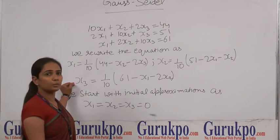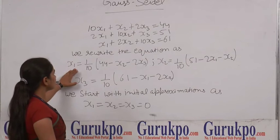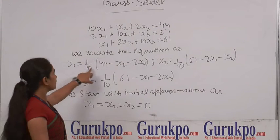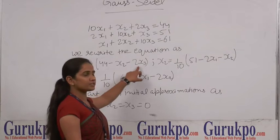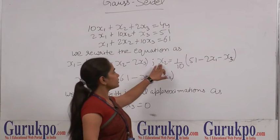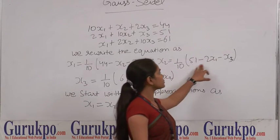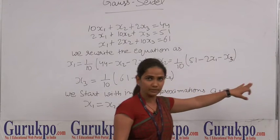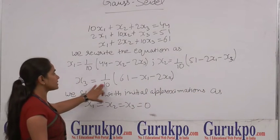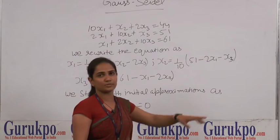So now, we have our equations in the form: x1 equals 1/10(44 - x2 - 2x3), x2 equals 1/10(51 - 2x1 - x3), and x3 equals 1/10(61 - x1 - 2x2).